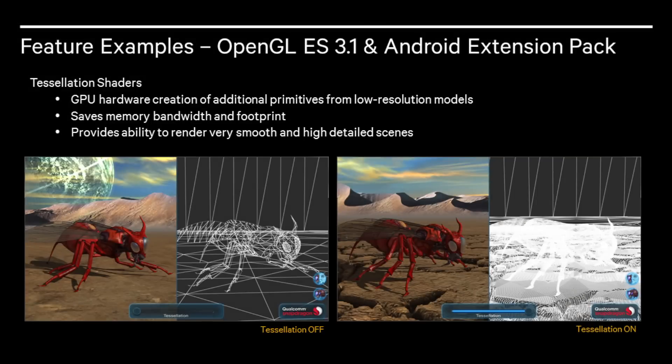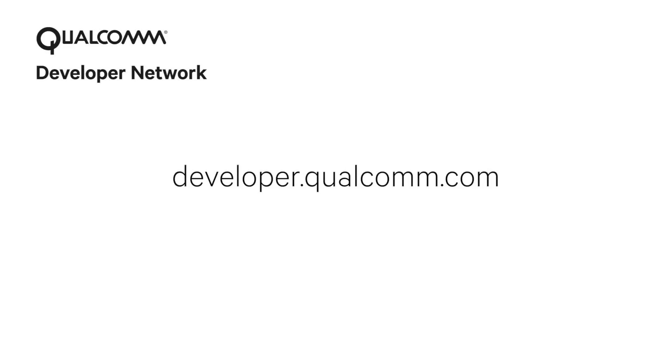The last feature added in OpenGL ES3.1 and the Android Extension Pack are tessellation shaders, which enable GPU creation of triangles from low-resolution meshes. You can create detail from a low-resolution mesh, saving memory bandwidth and footprint because the GPU creates additional geometry without needing to send anything through the bus. This provides the ability to render very smooth and highly detailed scenes. Thanks for watching this video on an overview of the graphics pipeline. Visit the Qualcomm Developer Network to learn more about graphics and tools on Qualcomm's mobile hardware.